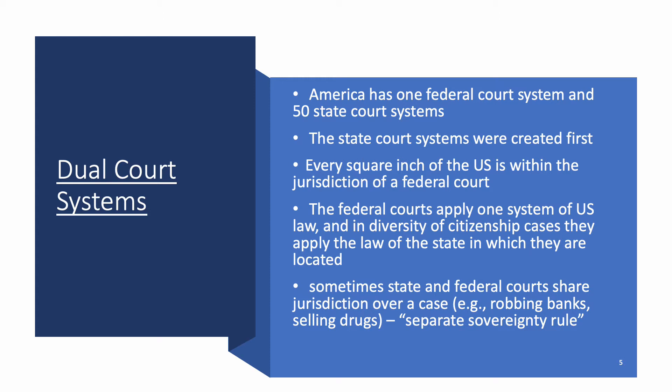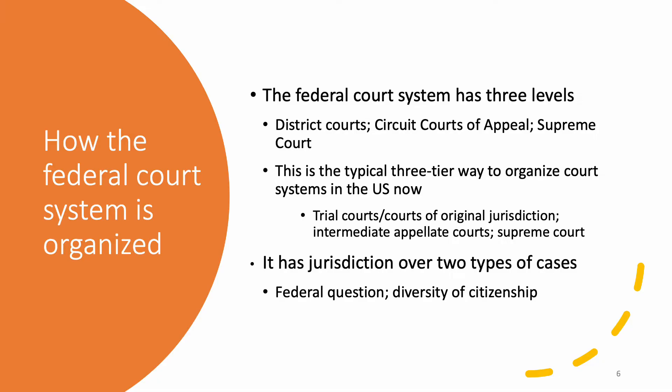That doesn't happen very often, but it can. For example, if someone were to rob a bank in downtown Chicago, that person could be prosecuted under federal law because the federal government outlaws bank robbery and insures bank deposits. But they could also be prosecuted for bank robbery in the courts of the state of Illinois. The double jeopardy rule doesn't preclude this — they can still be prosecuted twice for the same crime in separate courts. That's called the separate sovereignty rule.